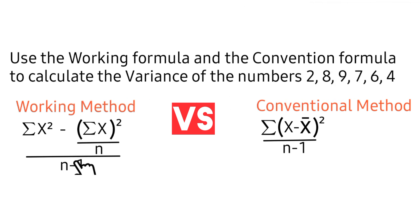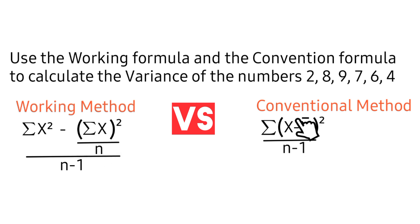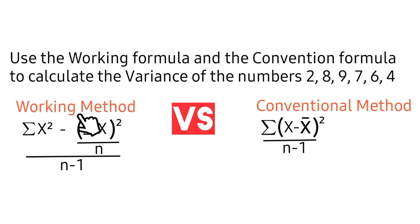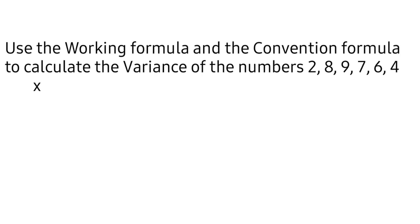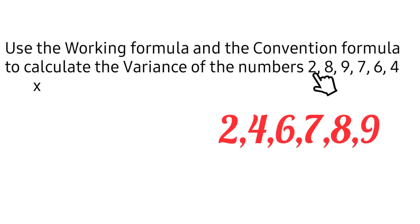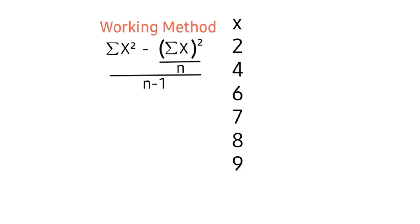This is the working formula used in calculating the sample variance in statistics, while this formula is the conventional method of calculating sample variance. We'll start with the working formula. Let's arrange this data in ascending order: the values are 2, followed by 4, followed by 6, next is 7, we have 8, and lastly 9.